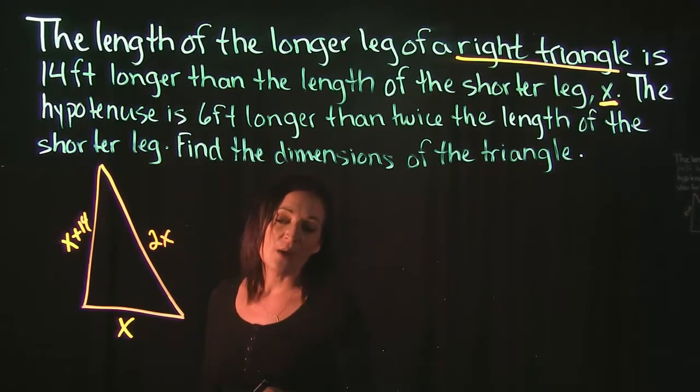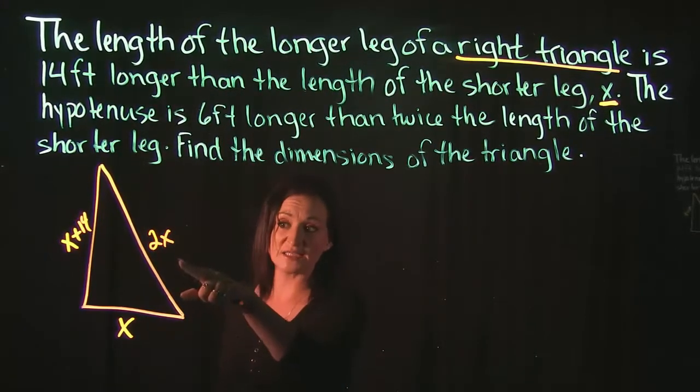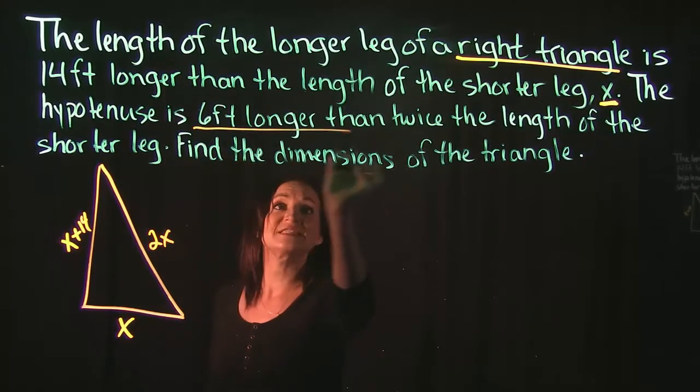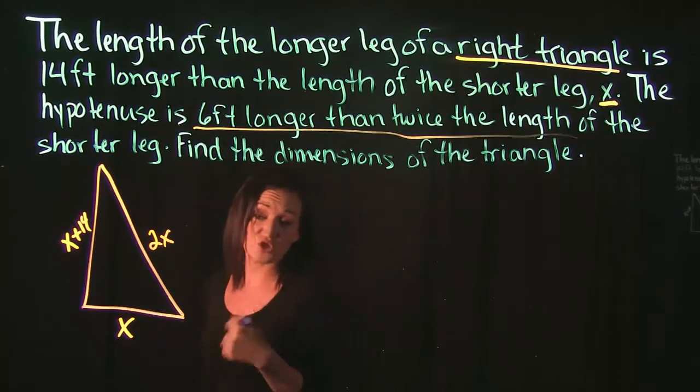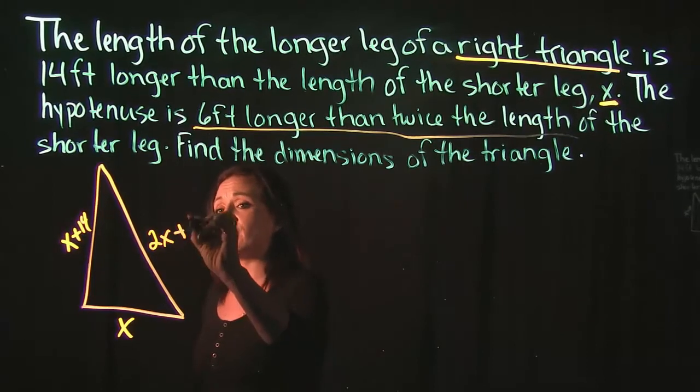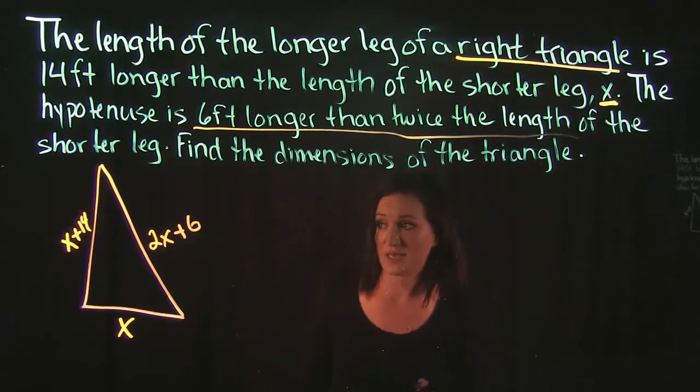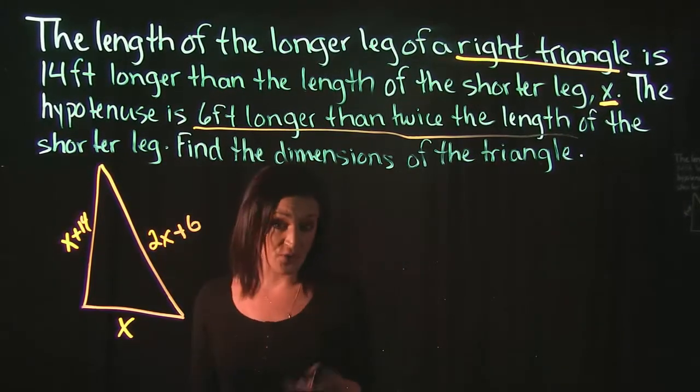But it said not only do I want twice the length of it, I want it to be 6 feet longer than twice the width. So that means I'm going to take twice the width plus I'm going to add 6 to it. So this gives us our three sides.